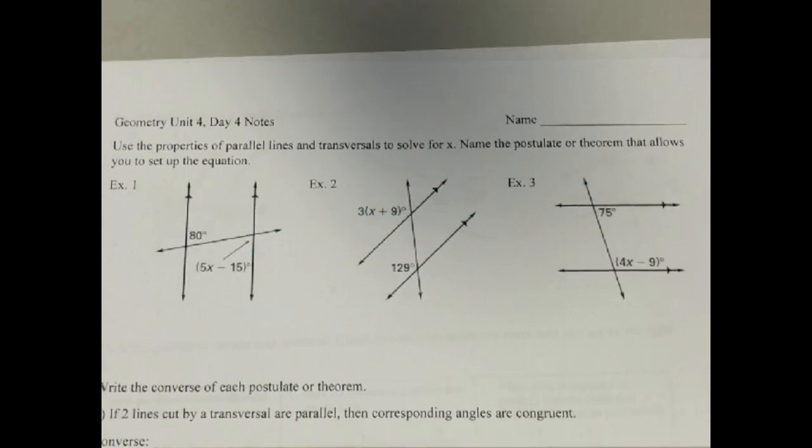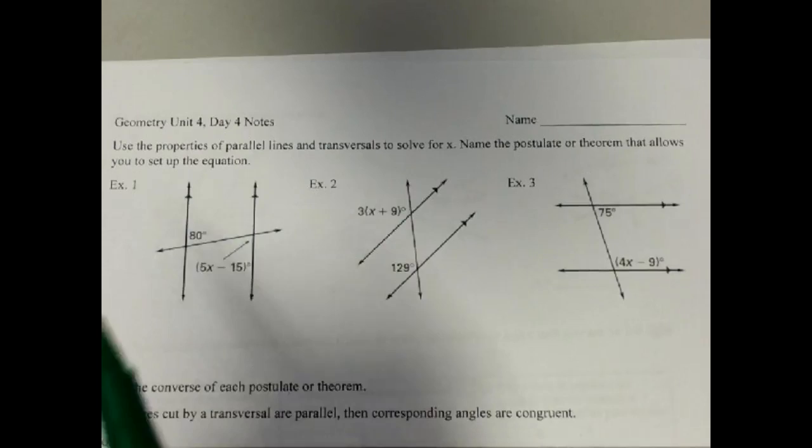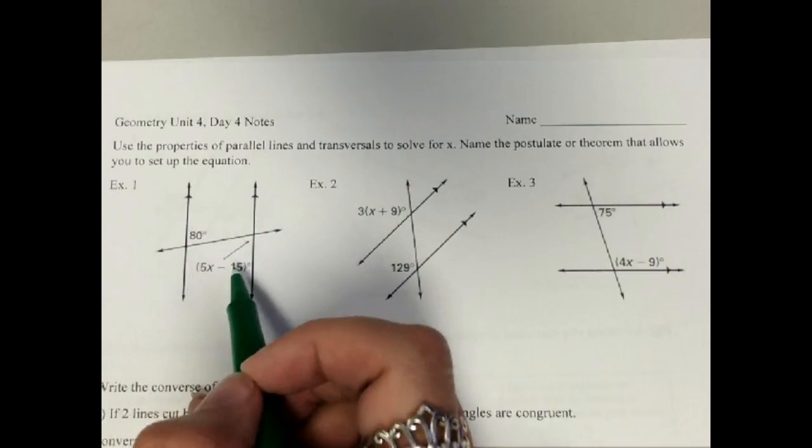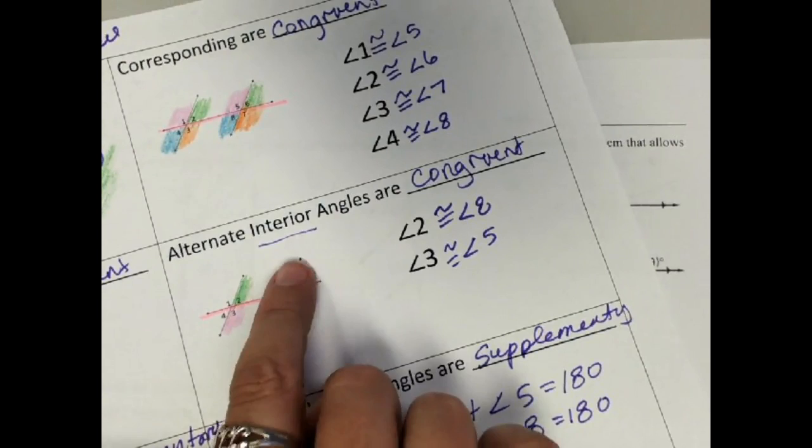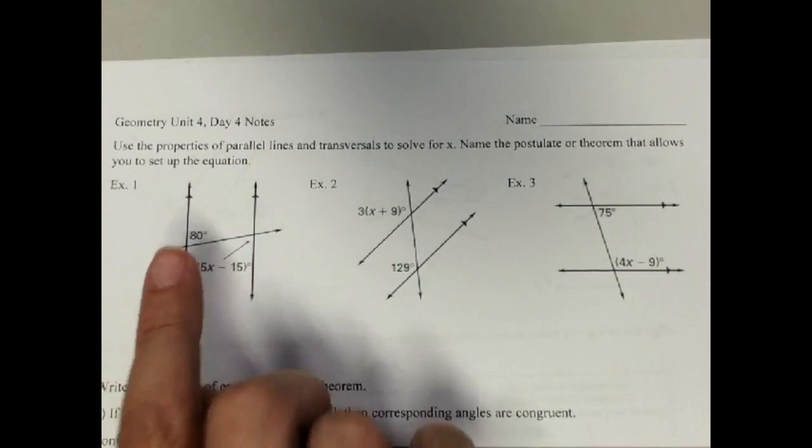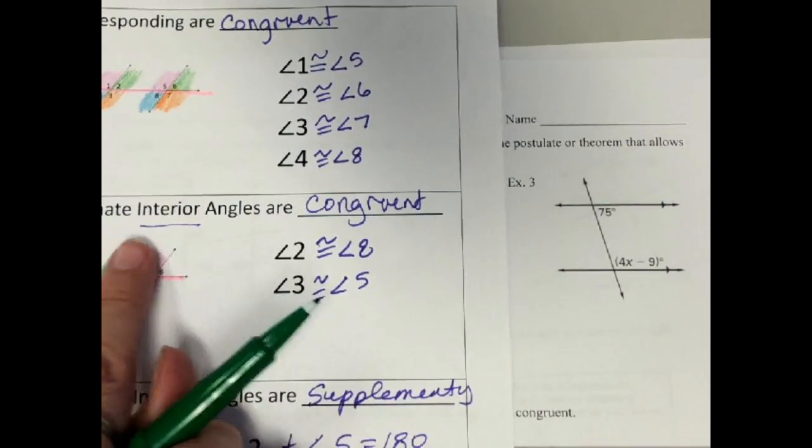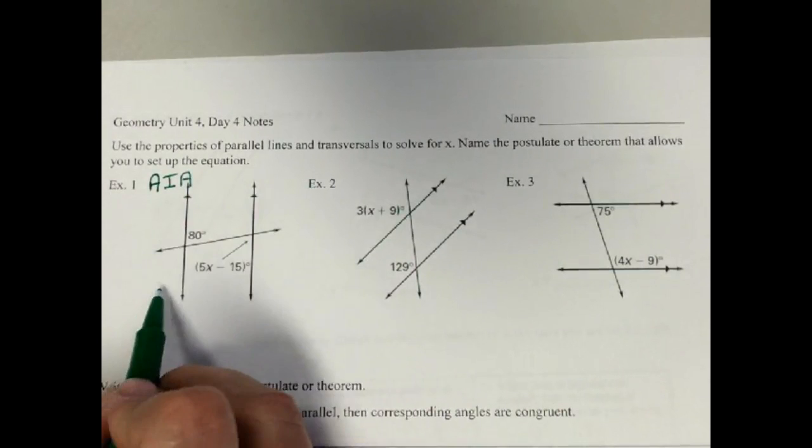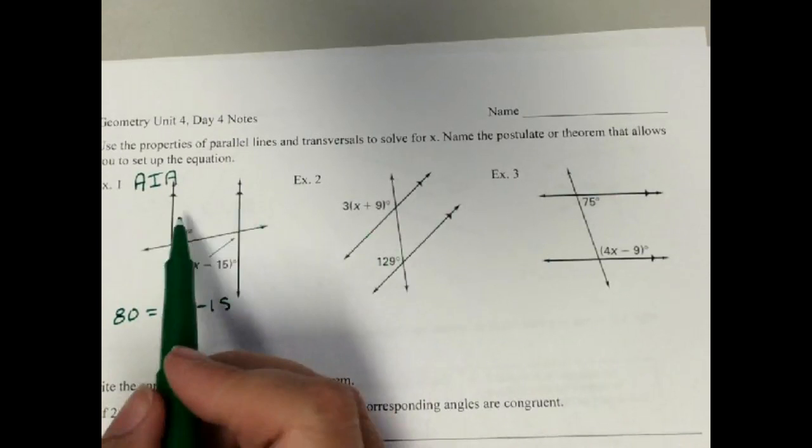For instance, this angle and this angle here, these are alternate interior angles. And we talked about those last time right here on these notes, where it's the ones on the inside of the parallel lines on opposite sides of the transversal. So those are alternate interior angles, and we know alternate interior angles are congruent. So we know that they're equal to each other, so our equation is going to be this equals this. This angle is equal to this one.